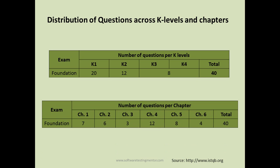The 40 questions are also distributed across the six chapters: chapter one yields 7 questions, chapter two yields 6, chapter three yields 3, chapter four has the most with 12 questions, chapter five has 8, and chapter six has 4 questions.